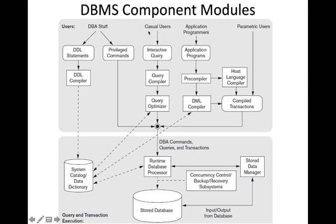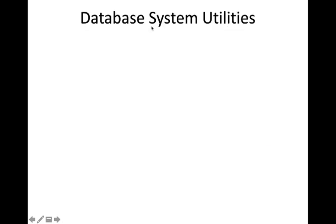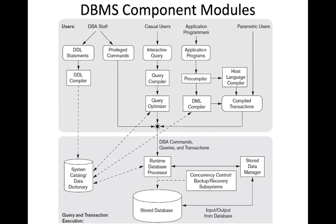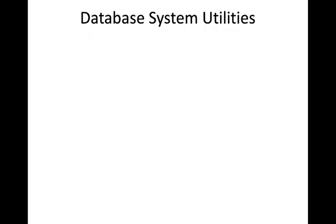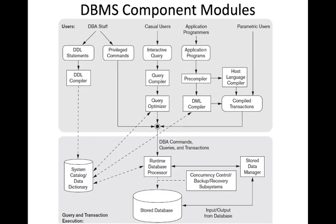The second type of user is the casual user. A casual user is an ordinary person who interacts with the database — for example, when you go to an ATM, you are called a casual user. There will be interactive queries: the casual user uses menu-based, form-based, mobile, or touch-based interfaces and generates interactive queries.